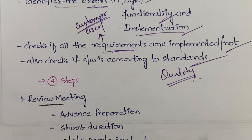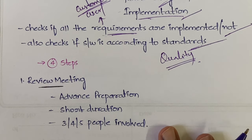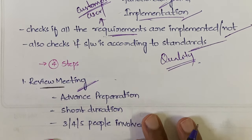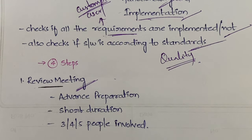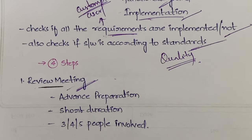In formal technical review there are four steps. The first is the review meeting. The second is review reporting and record keeping. The third is review guidelines. The fourth is sample driven reviews.